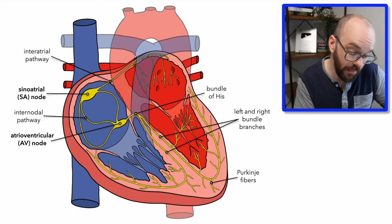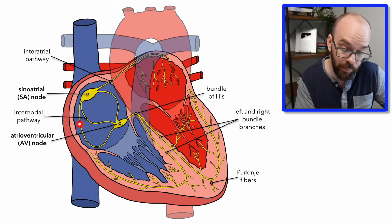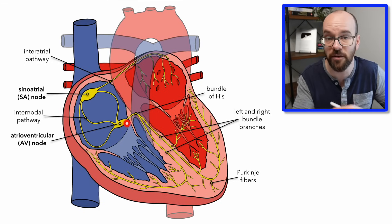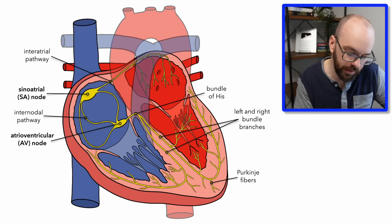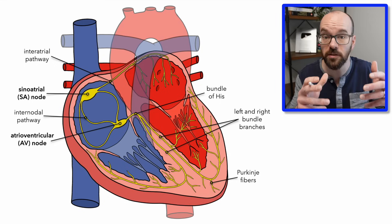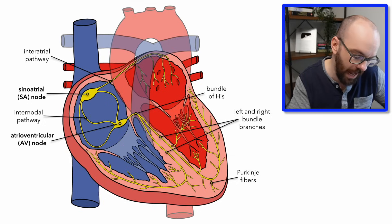Quick recap: the SA node sends a signal through the interatrial pathway to stimulate the left atrium, and through the internodal pathways to stimulate the right atrium. The signal reaches the AV node where it passes very slowly, causing a delay before the ventricles contract. It then passes through the bundle of His and the left and right bundle branches. On the way back up, it travels through the Purkinje fibers, stimulating ventricular cardiac muscle to contract and pump blood out through the pulmonary artery and the aorta.